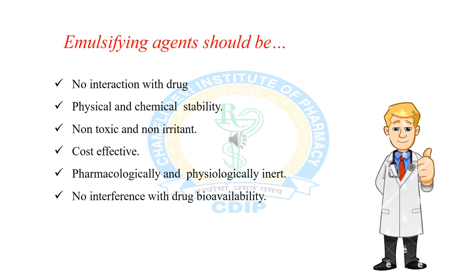There are a large number of emulsifying agents available to prepare a stable emulsion, but it is very difficult to select a proper emulsifying agent. An emulsifying agent should possess the following ideal properties: no interaction with ingredients or API of the preparation; it should be physically and chemically stable; non-toxic and non-irritant; cost effective; pharmacologically and physiologically inert; and it should not interfere with or alter the viability of the drug.